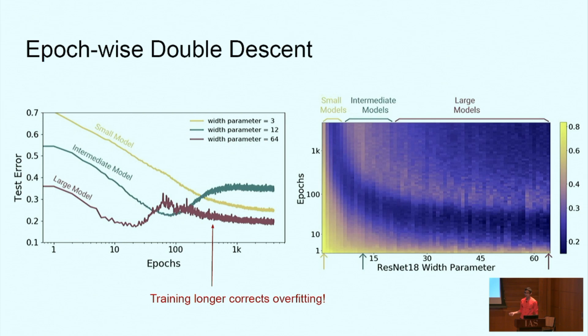In terms of epoch-wise double descent we see different behaviors depending on the size of the model. If you look at a very small model over the course of its training, a model which is not able to fit the train set, then the test error decreases monotonically over time. Now for intermediate sized models which are just barely able to fit the train set, the test error first decreases and then increases at the end as it starts to overfit. Now the really interesting thing is for very large models which are able to fit many more samples, test error undergoes double descent where it first decreases in the beginning of training, then it starts to overfit, and then somehow training longer corrects this overfitting and test error goes back down again.